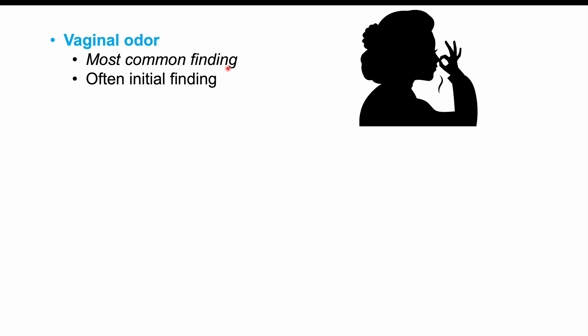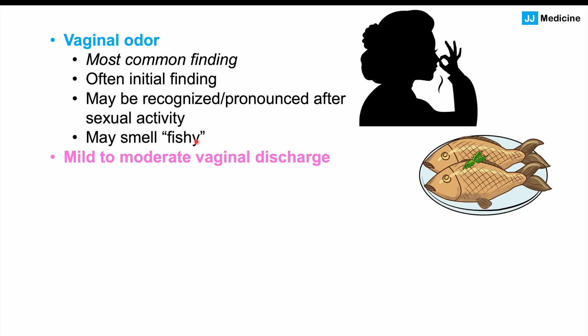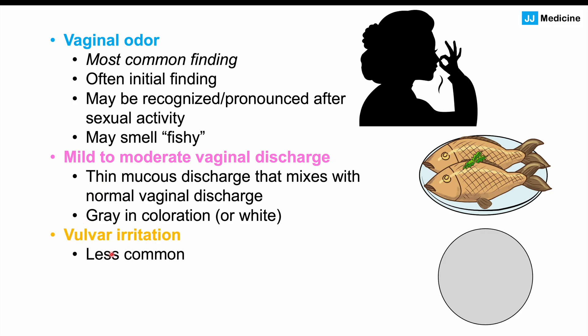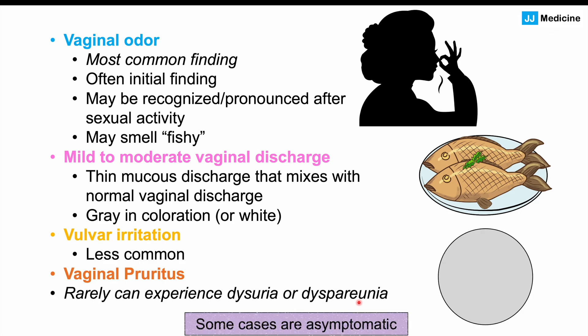The most common finding in bacterial vaginosis is vaginal odor, often the initial finding, which may be more pronounced after sexual activity and has a characteristic fishy smell. We can also see mild to moderate vaginal discharge that is thin, mucousy, mixed with normal vaginal discharge, and often gray in color, though sometimes white or yellow. Less commonly, there is vulvar irritation and vaginal pruritus. Rarely, dysuria or dyspareunia may occur. Some cases can be asymptomatic, meaning BV may actually be underreported.